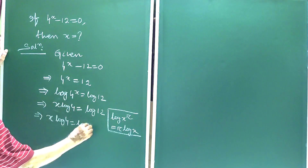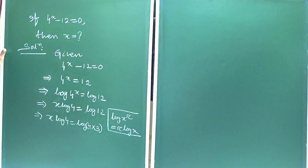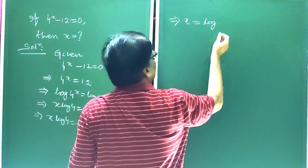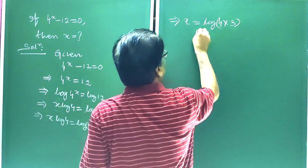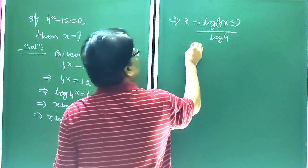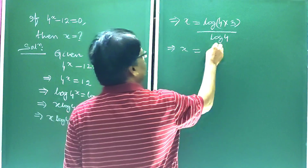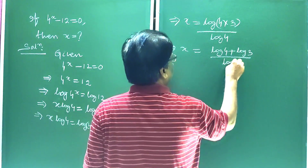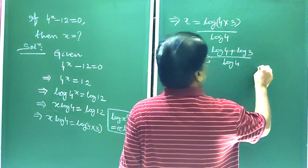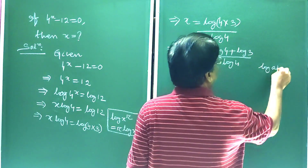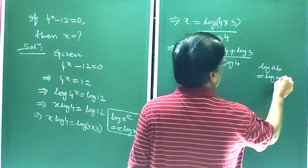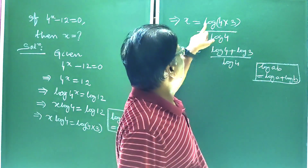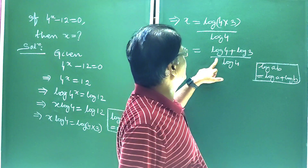This implies x log 4 is equal to log of 4 into 3. This implies x is equal to log(4 into 3) by log 4. This implies x is equal to log 4 plus log 3, all over log 4. We know log(AB) is equal to log A plus log B, so log of 4 into 3 is equal to log 4 plus log 3.